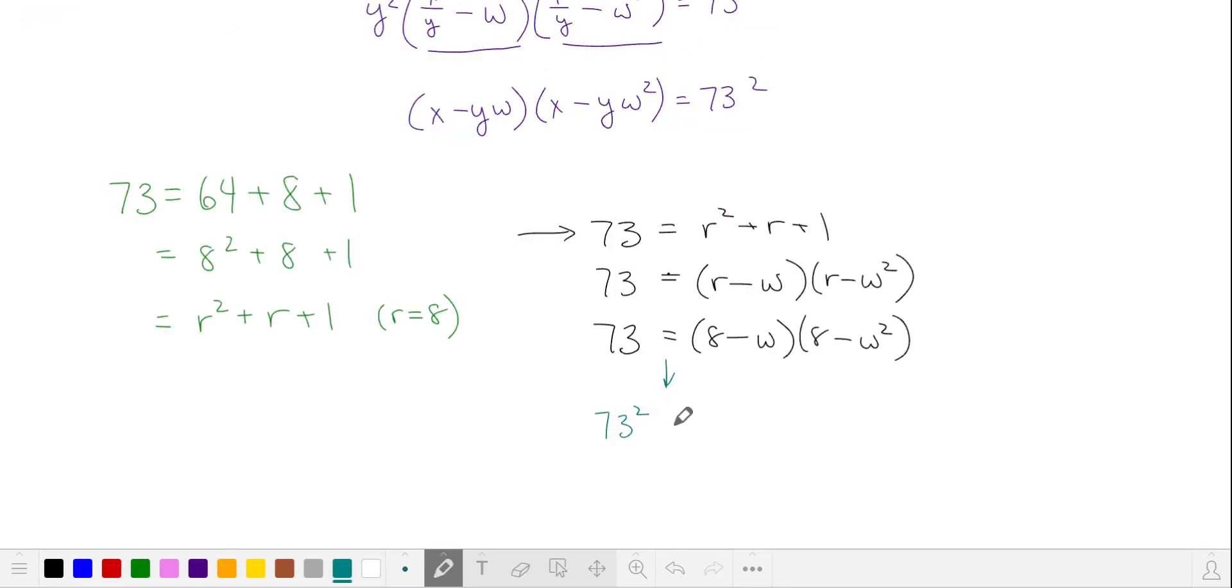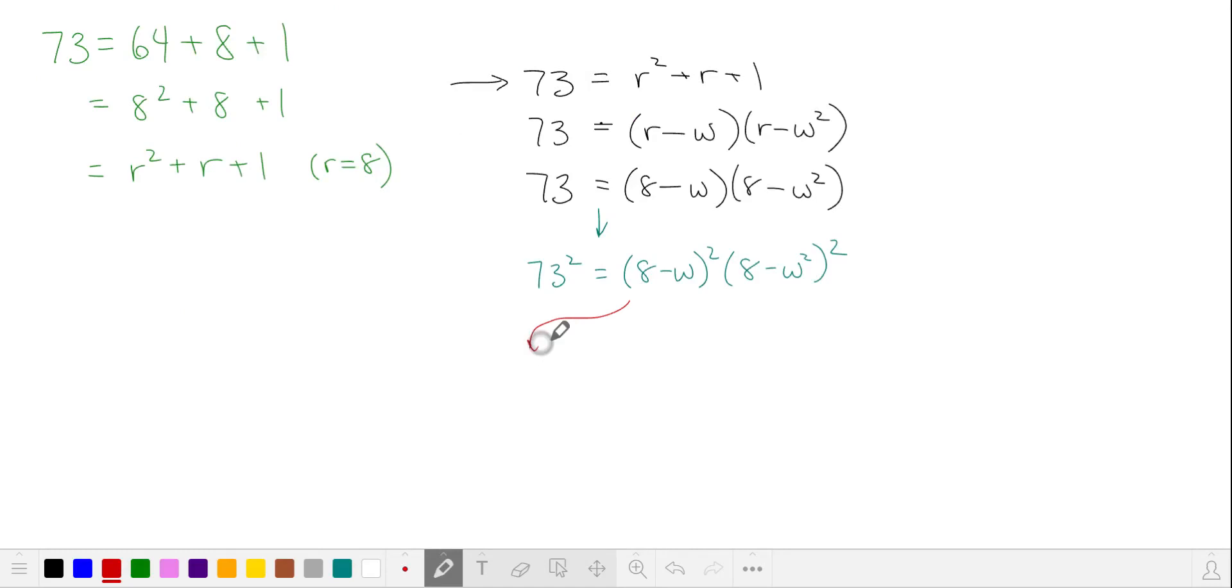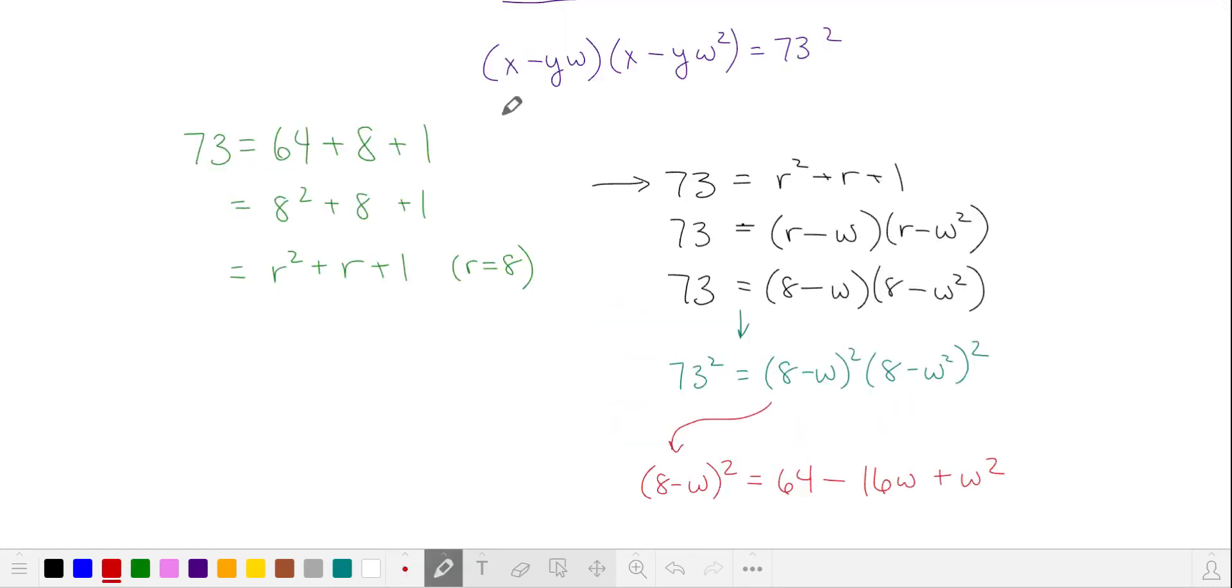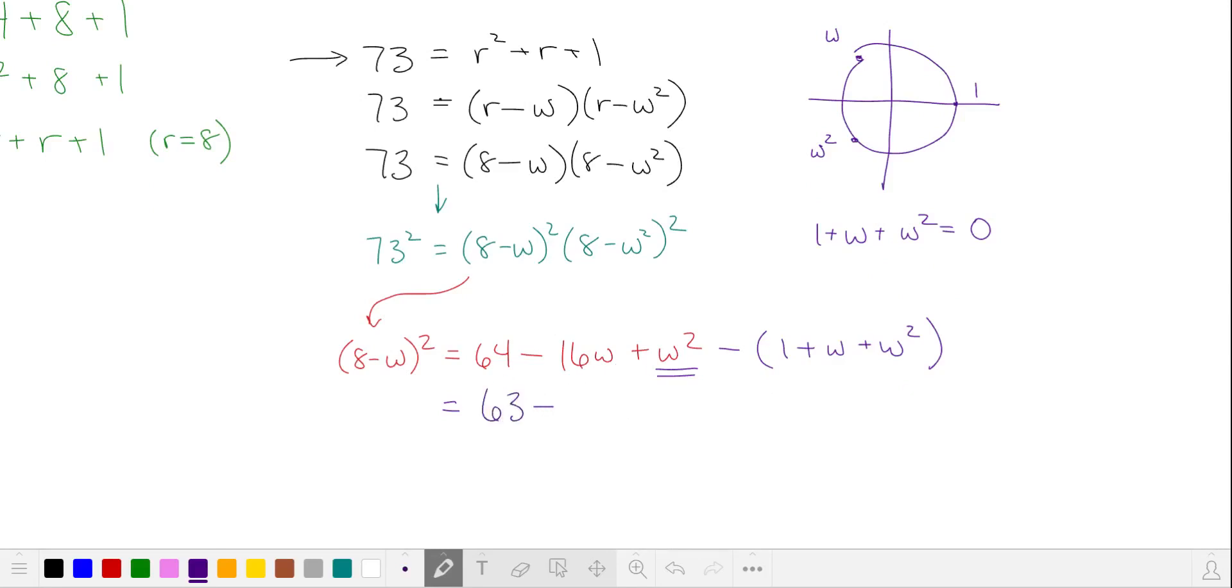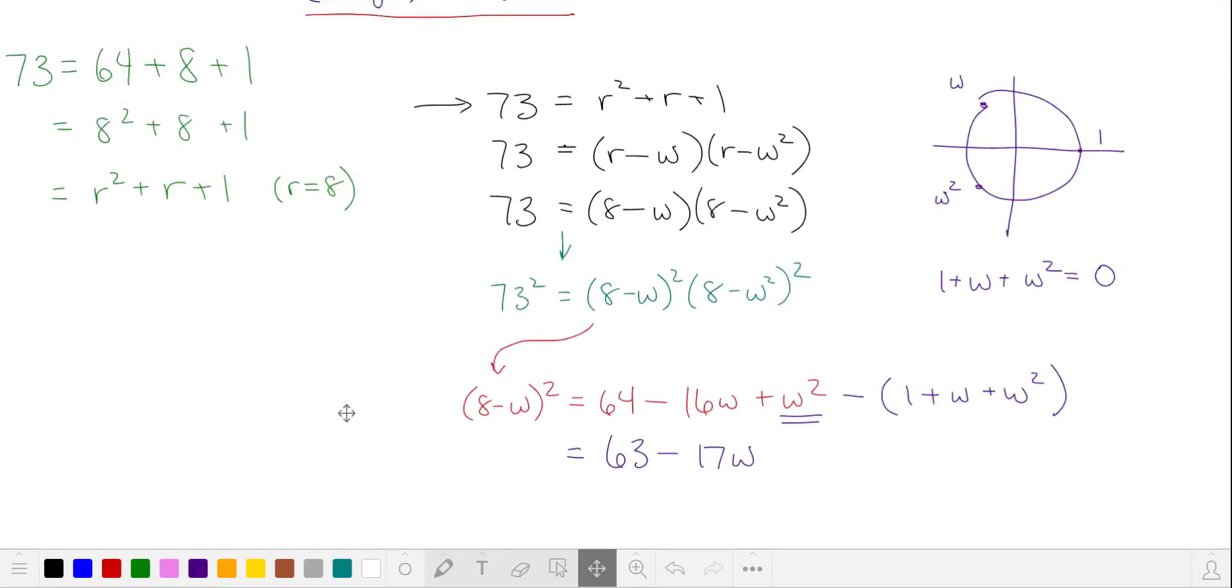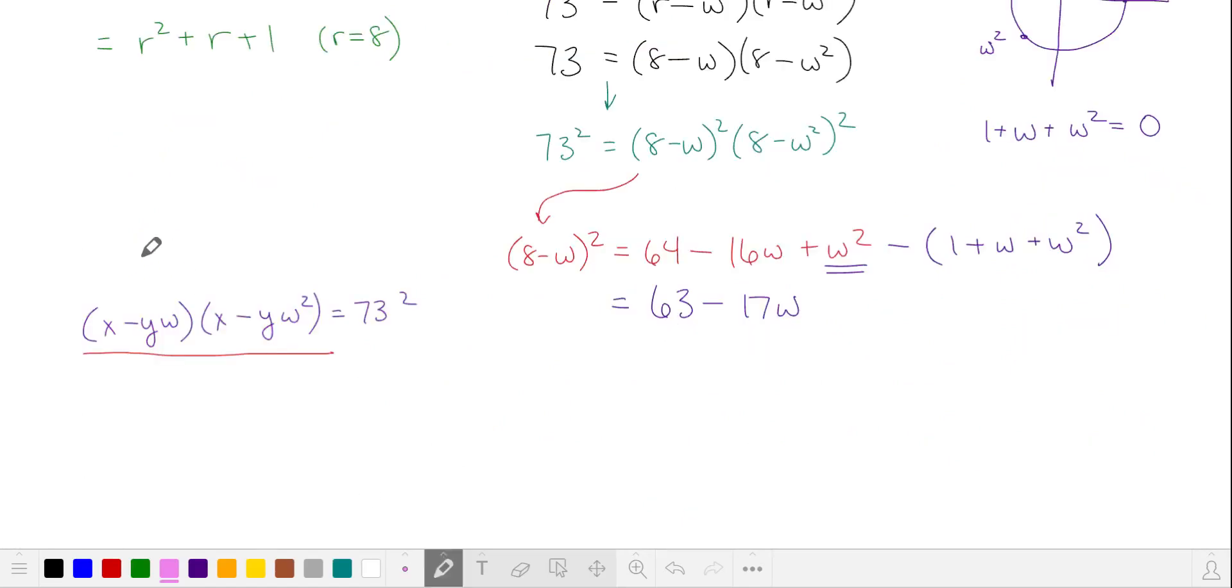So let's square both sides, and we'll first square each of these factors separately. Expanding, we get this expression on the right hand side. We are aiming for something that looks like this, and again the sum of our roots of unity equals 0. I'm going to try to get rid of this ω² by subtracting 1 plus ω plus ω², which is equivalent to subtracting 0. When I do this and combine like terms, I get 63 minus 17ω, which is looking like my first factor on the left hand side.